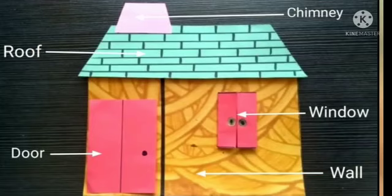You can see there is a house. There are four main parts in the house. Number one is the roof. Do you know what is a roof? The roof covers the top of the house. This green part is the roof.